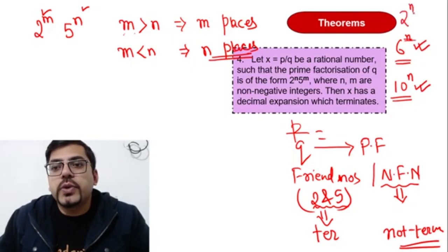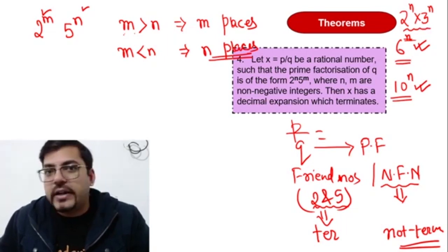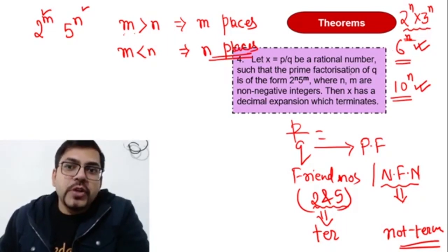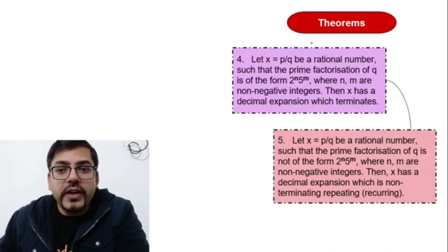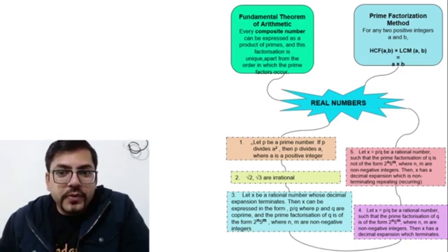And then you will show that it is 2 raised to power n into 3 raised to power n, and we do not have 2 and 5 in pair to get a 0, and hence it will never end at 0. So these types of questions again you might find there. So people, please pay attention over these things. These all are very simple questions and you can very easily tame them.